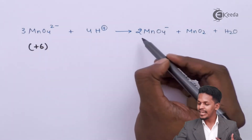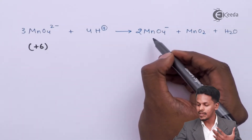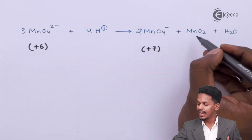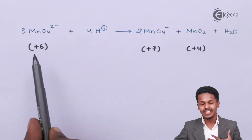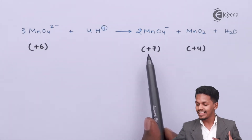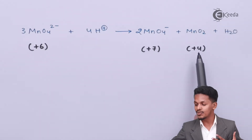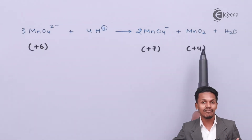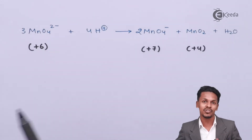Comparing the products: the permanganate MnO₄⁻ has an oxidation state of +7 for the manganese atom, while MnO₂ has an oxidation state of +4. So the same element, manganese, which had an oxidation state of +6, is showing a further oxidized product at +7 as well as a reduced product at +4. Therefore, the same element gives two different oxidation states, making this a disproportionation reaction.